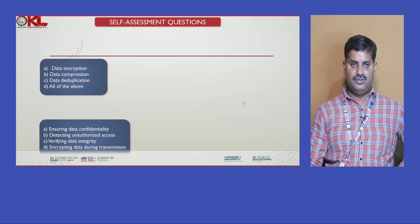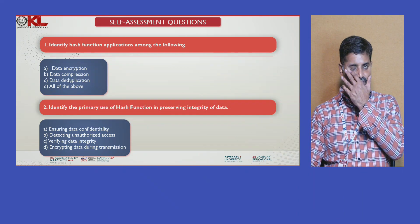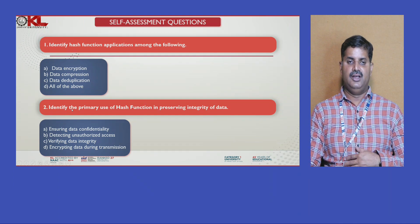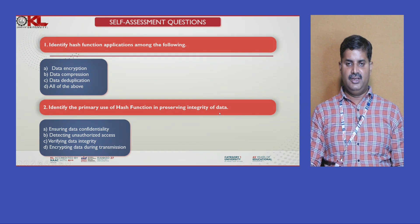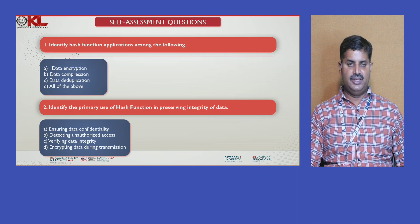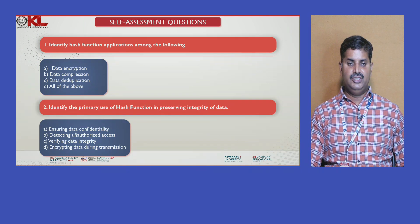These are the self-assessment questions. First question: identify the hash function application among the following — data encryption, data compression, data deduplication. Data compression is one of the hash function applications. The second question: identify the primary use of hash functions in preserving the integrity of data. The options are ensuring data confidentiality, detecting unauthorized access, verifying data integrity, and encryption of data during transfer. The primary use of hash functions in preserving integrity is verifying data integrity — option C is the correct answer.